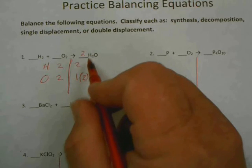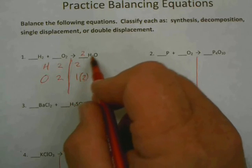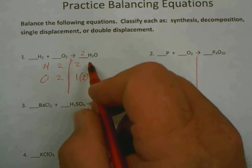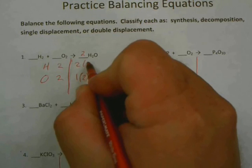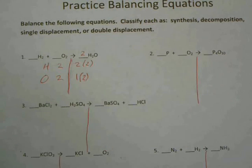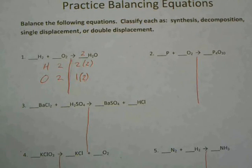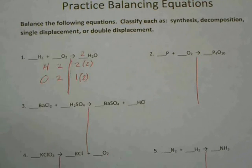So if I put that two there, does that mean it just goes for the O? No — it also goes for the H. Come down: two. Am I balanced? No? Why not? Because my H's don't match anymore.